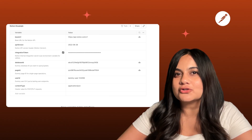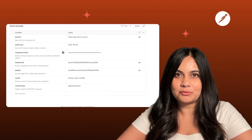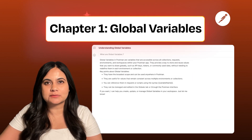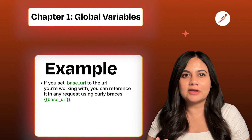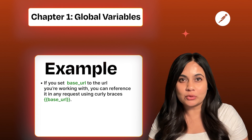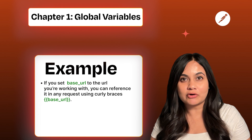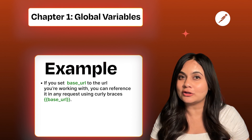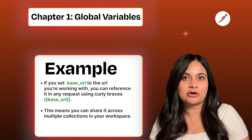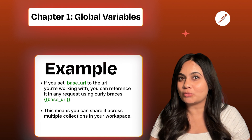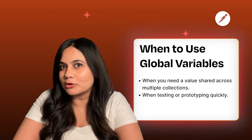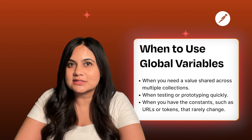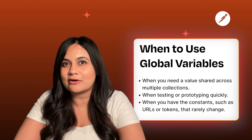Let's take a closer look at each type of variable, starting with global variables. Global variables can be used anywhere in your workspace across all collections and environments. For example, if you set base URL to any URL you're working with, you can reference it in any request or collection using the curly braces notation, sharing it across multiple collections. This is great when you need a variable shared across collections, when you're testing and prototyping quickly, or when you have constants like URLs or tokens that rarely change.